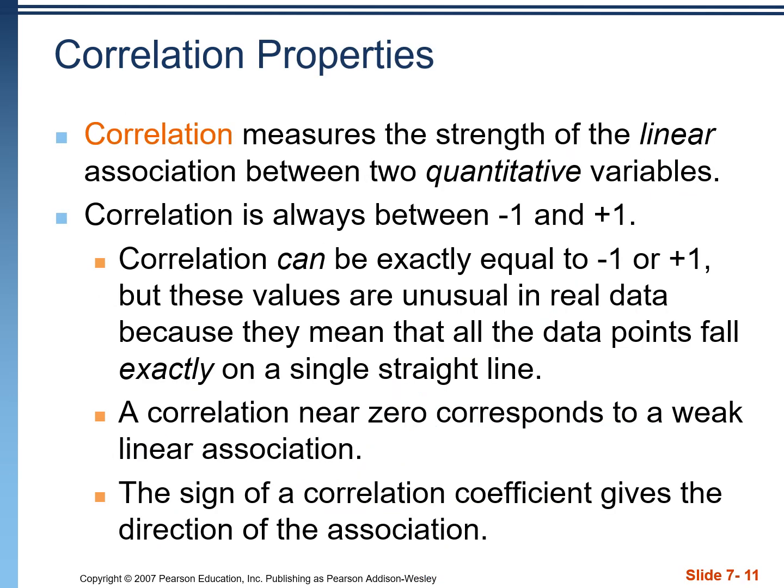Here's what you do need to know about correlation. It's always measuring the strength of the linear association between two quantitative variables — that's the only context in which we should use the word correlation. The value of the correlation R is always going to be between negative one and positive one. If it's exactly equal to one of those numbers, it means the points in the scatterplot fall exactly in a straight line with no deviation. It's possible to get values of negative one and positive one, but it pretty much never happens in real life.